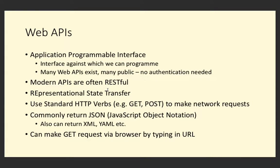A lot of mobile applications work on the basis that they retrieve data from somewhere else - they're not standalone apps, they tend to have network access. Typically, they access some kind of application programmable interface. There are plenty of public APIs we can use with all sorts of different information. Some require authentication, others don't. There are lots of public ones where you can just ask for data and get it back.